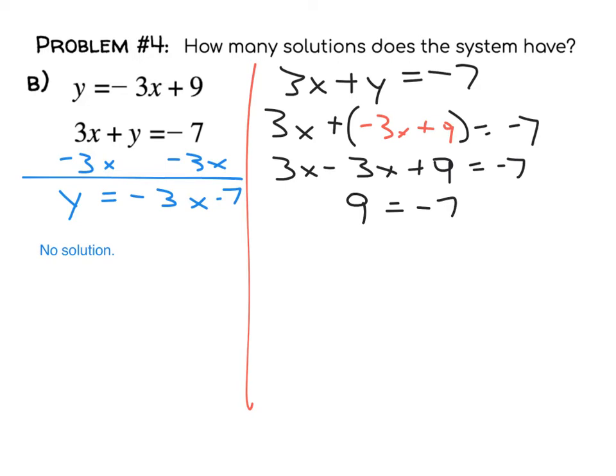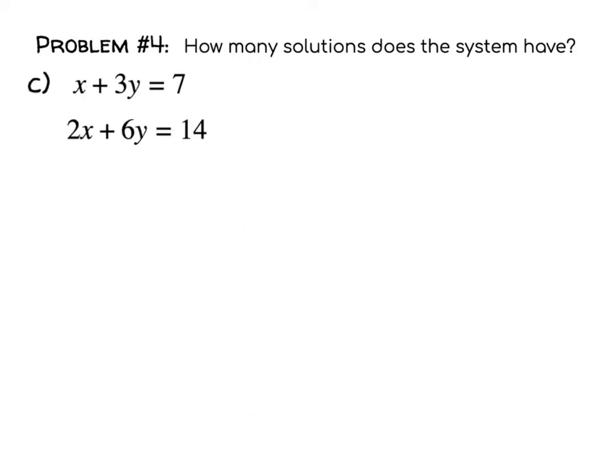When we tried to eliminate y by substituting its expression in terms of x, we tried to eliminate y, and x went away too. That's one of these special cases. When you get that happening, if you're going to be combining them, then what you need to look for is, do I get a true statement here or a false statement? You get a false statement. False statements like this will mean that it's no solution. These will be parallel.